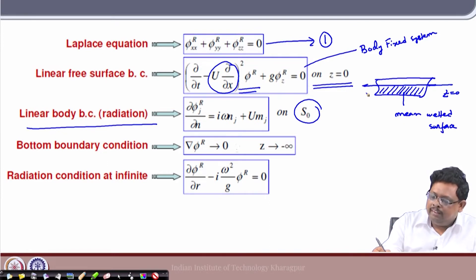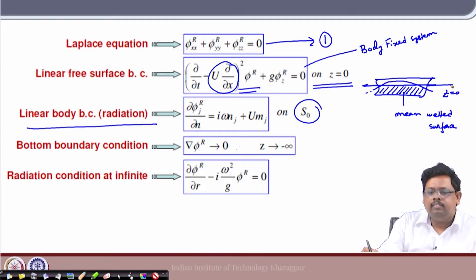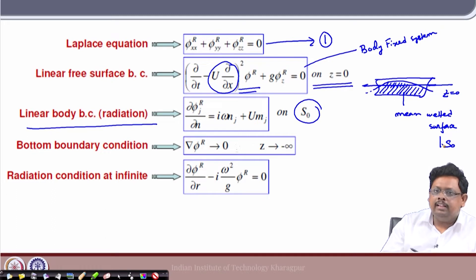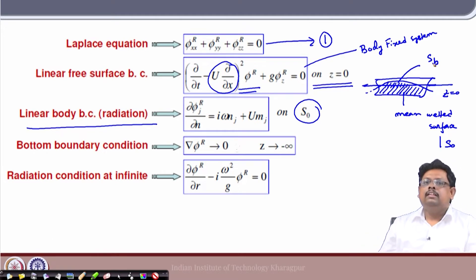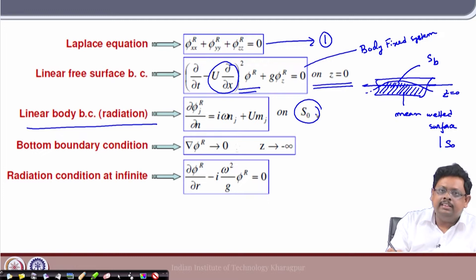If I superpose a wave onto this, some part will be above the mean wetted surface and some part will be included below. If I consider the mean wetted surface, we define it as S0. If we consider the exact wetted surface, we call that SB. These are the nomenclatures: whenever I say S0, you have to understand it is on the mean wetted surface.